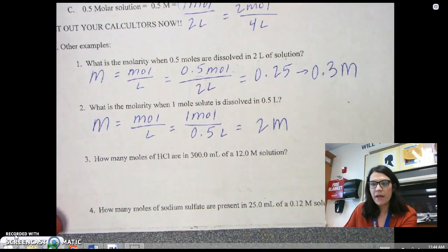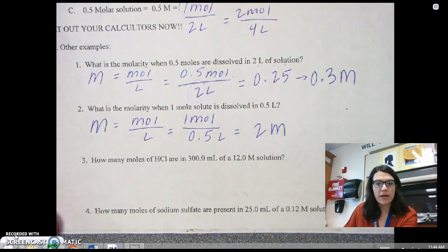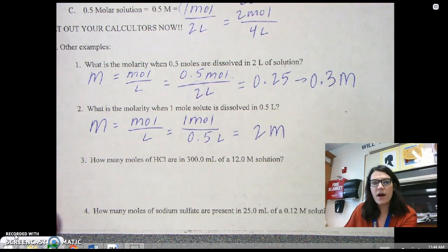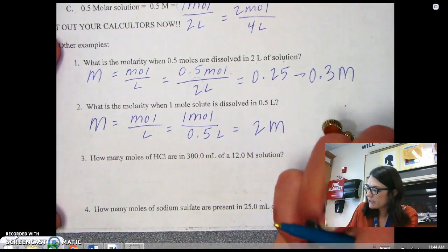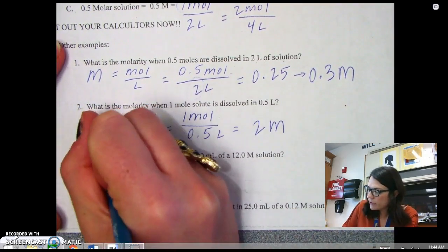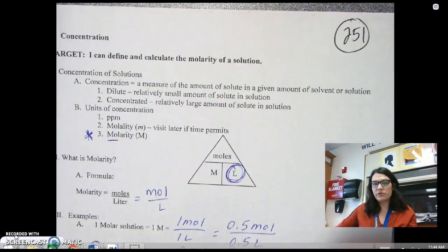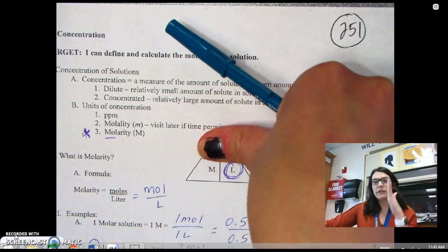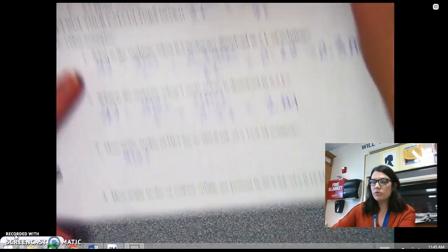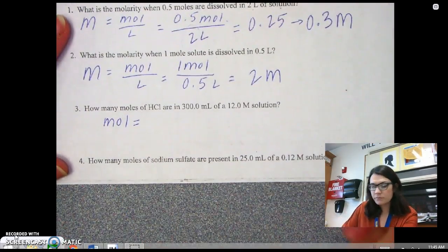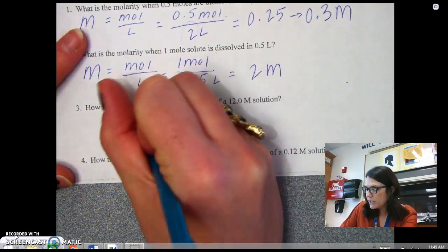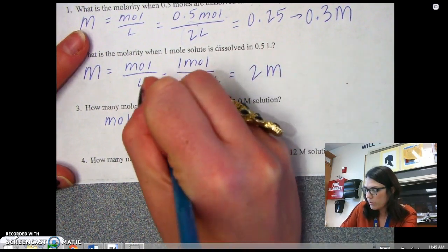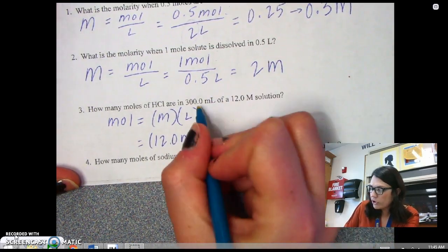I'm going to do one more example, and then we'll do more of these in class. Number three says, how many moles of HCl are in 300 milliliters of a 12 molar solution? So here, what it's telling me is that I'm looking for moles, and if I go back up to my triangle, moles is going to be molarity times liters, so moles is equal to molarity times liters.